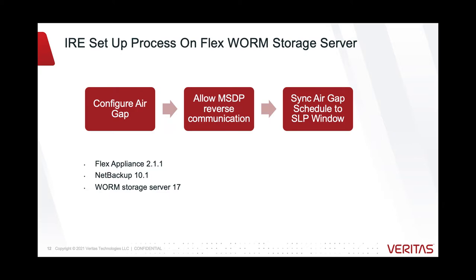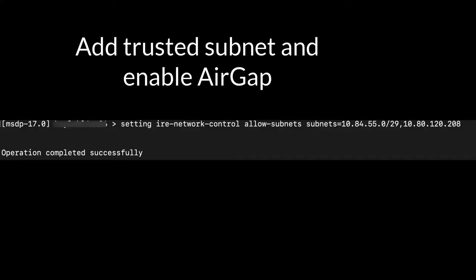All the commands below are executed on the MSDP Worm storage server shell. The following configuration was tested with FlexAppliance 2.1.1, NetBackup 10.1, and Worm storage server 17. Step 1: Add the subnet of the IRE domain into the network safe list to allow the IRE MSDP primary server, MediaServers, and DNS Server to access the MSDP Worm storage server after the network is closed by the air gap.